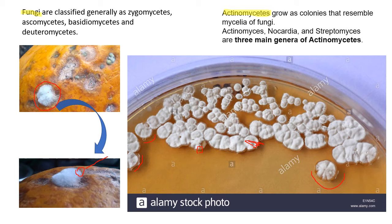So the first practical tip is colony appearance, and the second is the wire loop test: if you can easily lift the colony, it is fungi; if it is very difficult to lift, it is actinomycetes. The third tip is growth time: fungi grow in a minimum of about 24 hours, but actinomycetes need a proper 48 hours incubation before visual colonies appear.